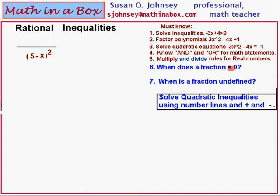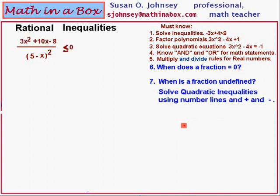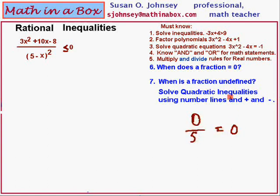Number six says: when does a fraction equal zero? If you have a fraction such as one-fifth, that does not equal zero. But how could you change this so that it would equal zero? The numerator would have to be zero. That's the only way to make a fraction equal zero is if your numerator is zero. Zero divided by five is equal to zero. So when does a fraction equal zero? If the numerator equals zero.